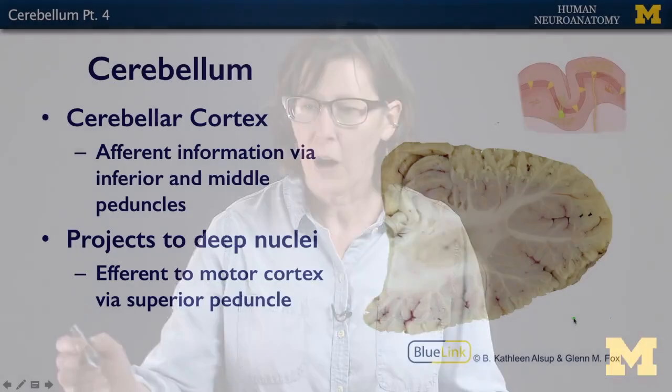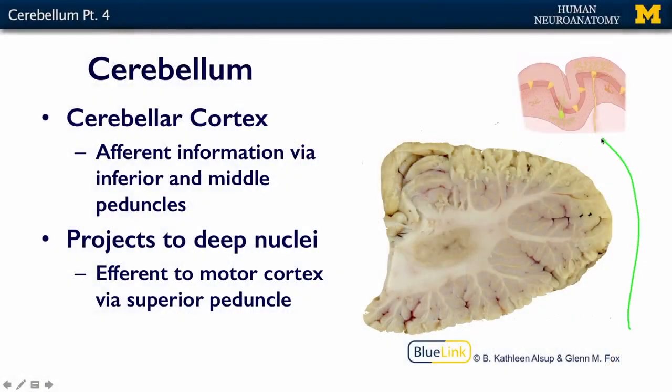The cerebellar cortex gets information from the brainstem and from the spinal cord — areas of the brainstem concerning balance, and areas of the spinal cord that have to do with the position of your muscles in space. All of this information comes into the cortex via the middle and inferior peduncles. Some of the fibers synapse directly on the Purkinje cells, and some are going to synapse on the granule cells, which then synapse on the Purkinje cells.